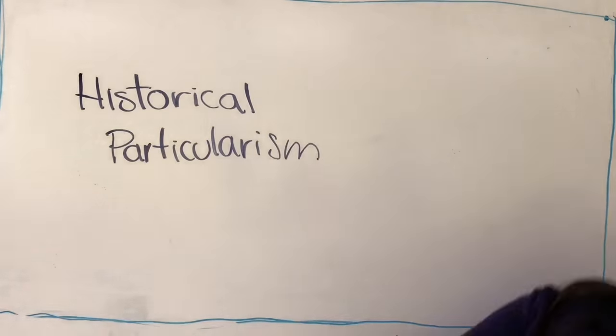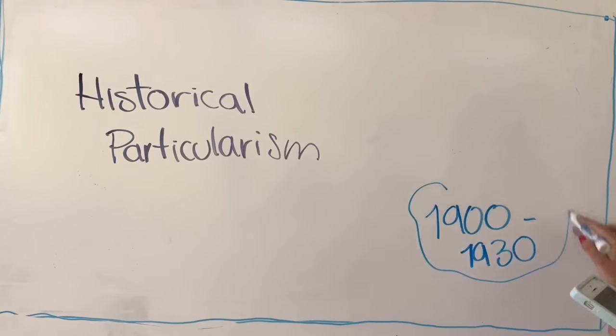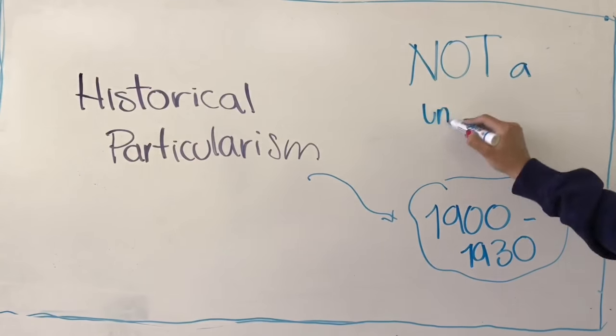Historical particularism is a theory that postulates that evolution is not a unilinear growth or process.